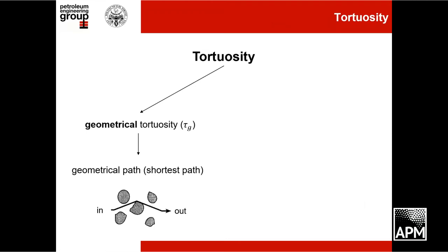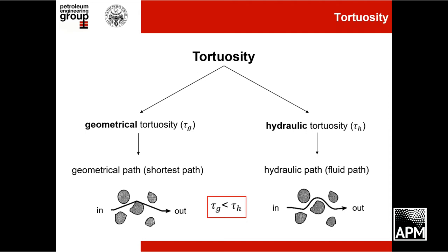For geometrical tortuosity, it is important to keep in mind that we need to estimate the shortest path. The other is the hydraulic tortuosity, which is the length of the actual fluid path inside the porous medium between an inlet and an outlet — requiring knowledge of the velocity field inside the porous material. By definition, the geometrical tortuosity is always lower than the hydraulic tortuosity, and here we calculate and compare both.